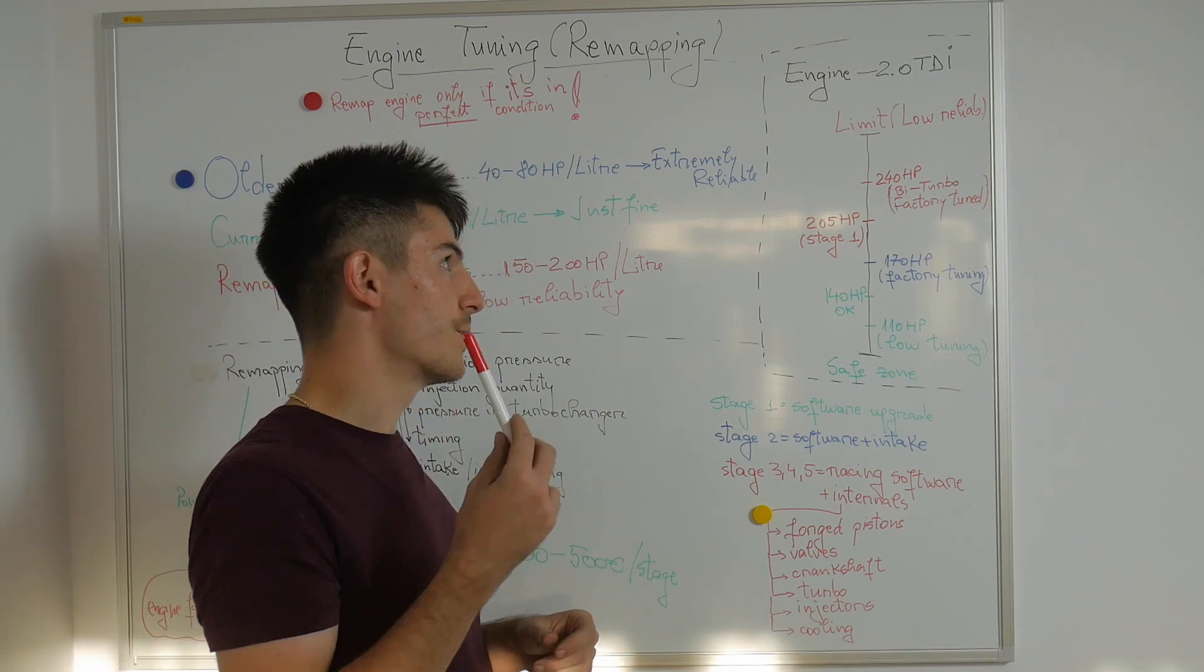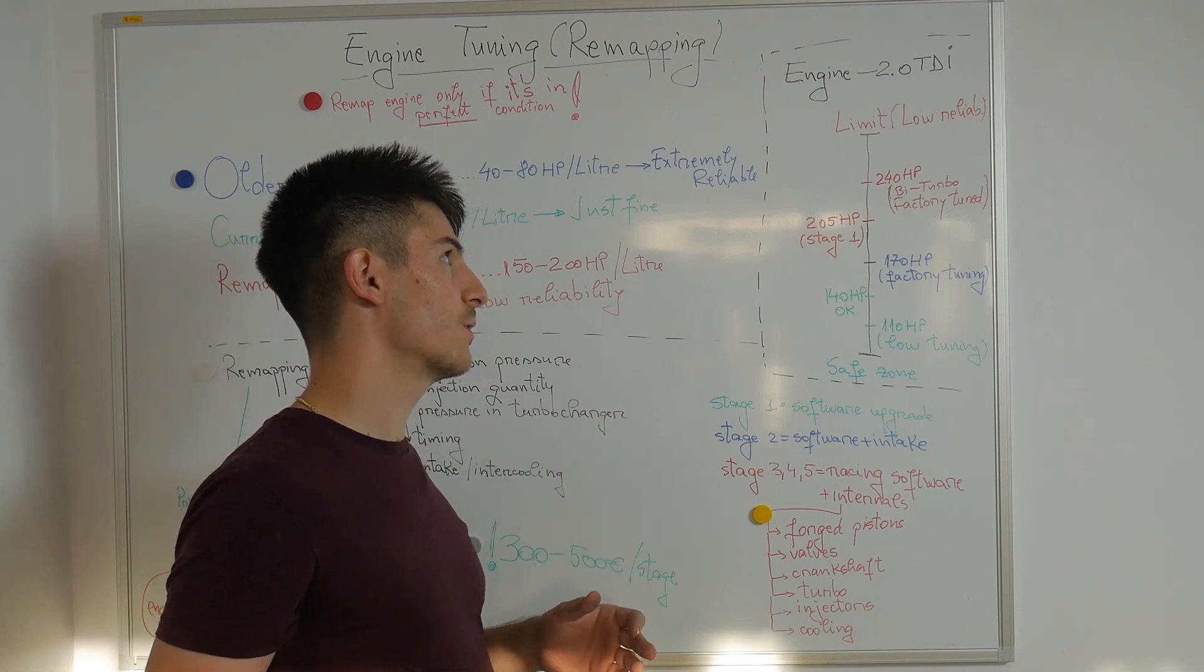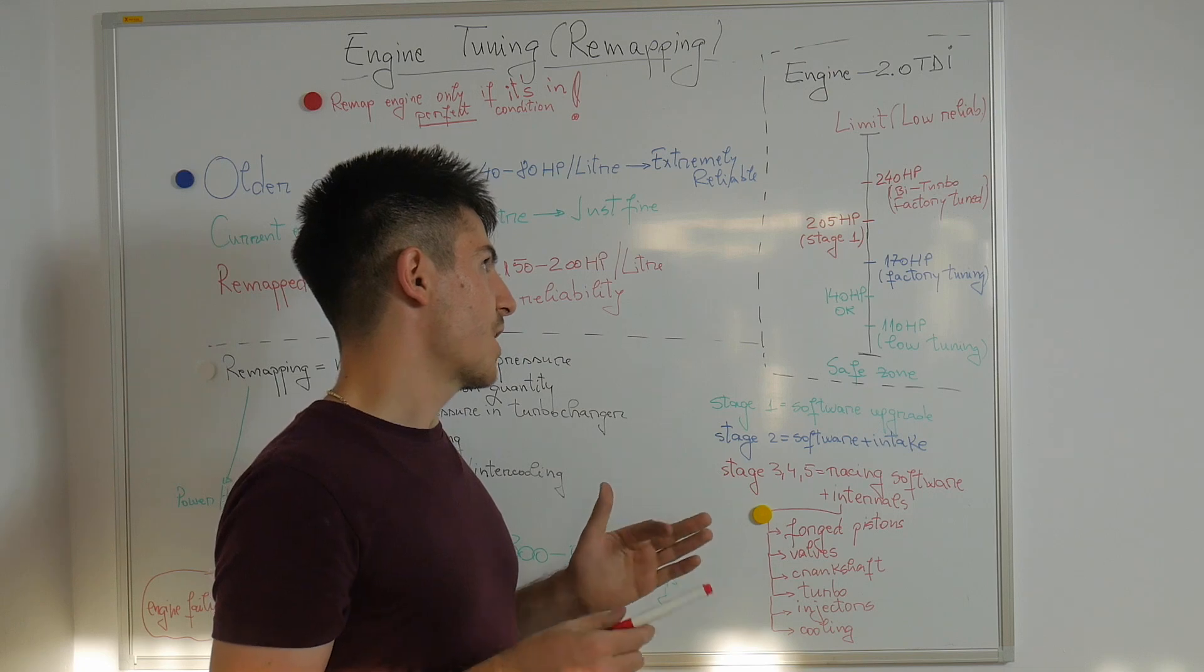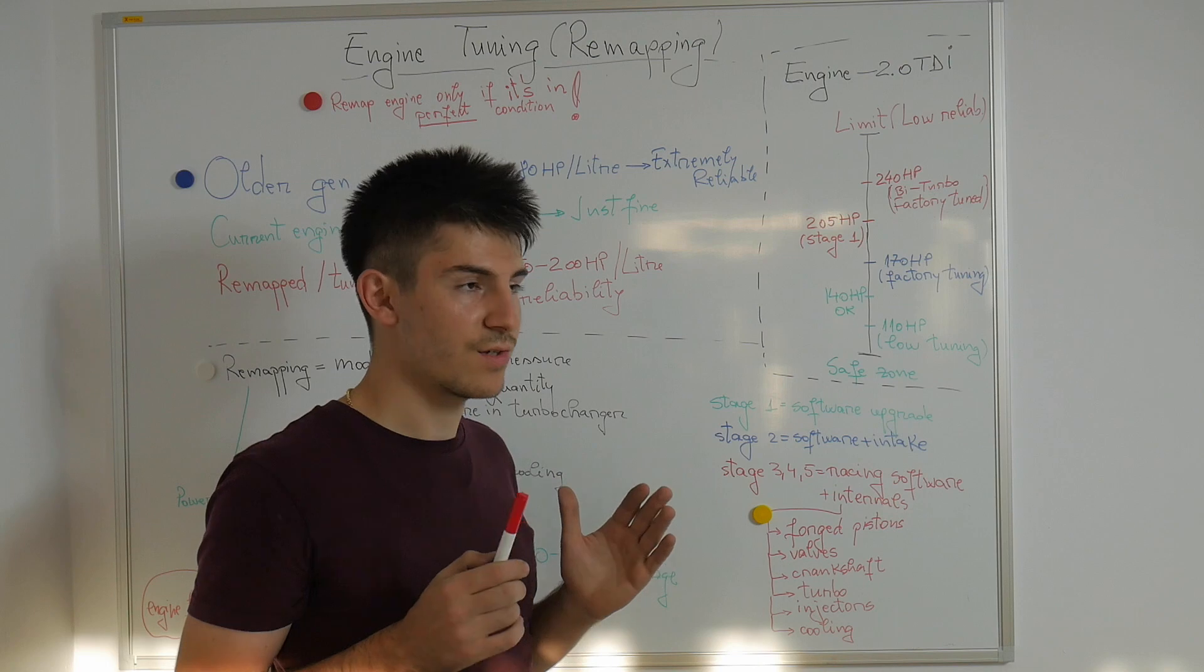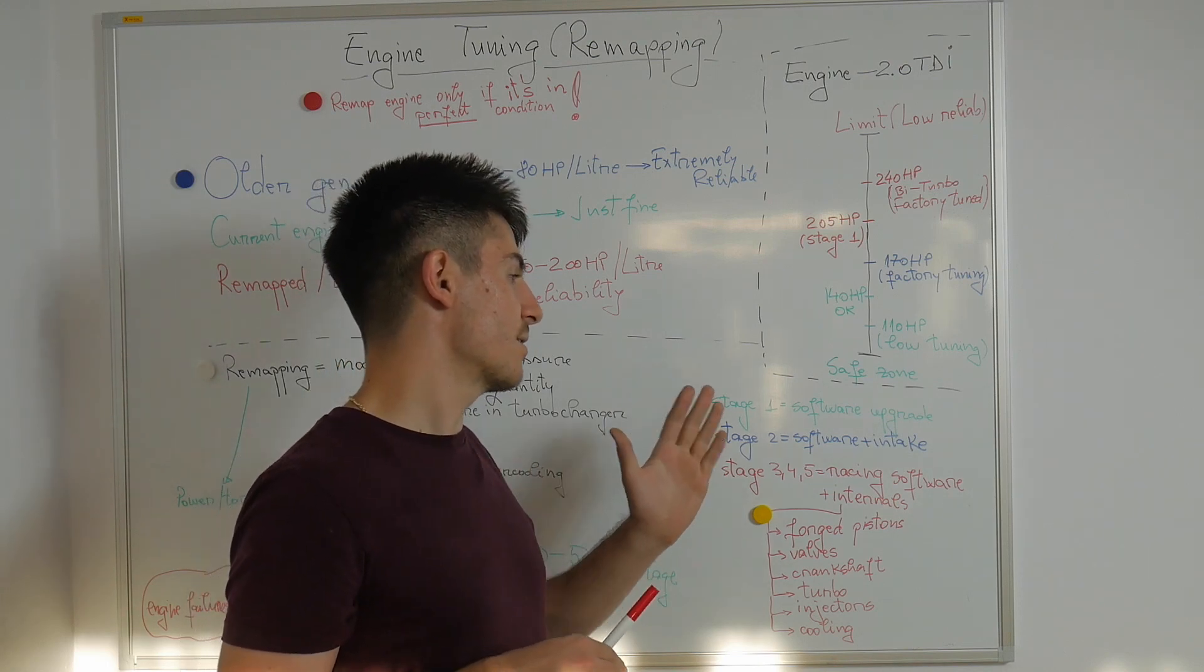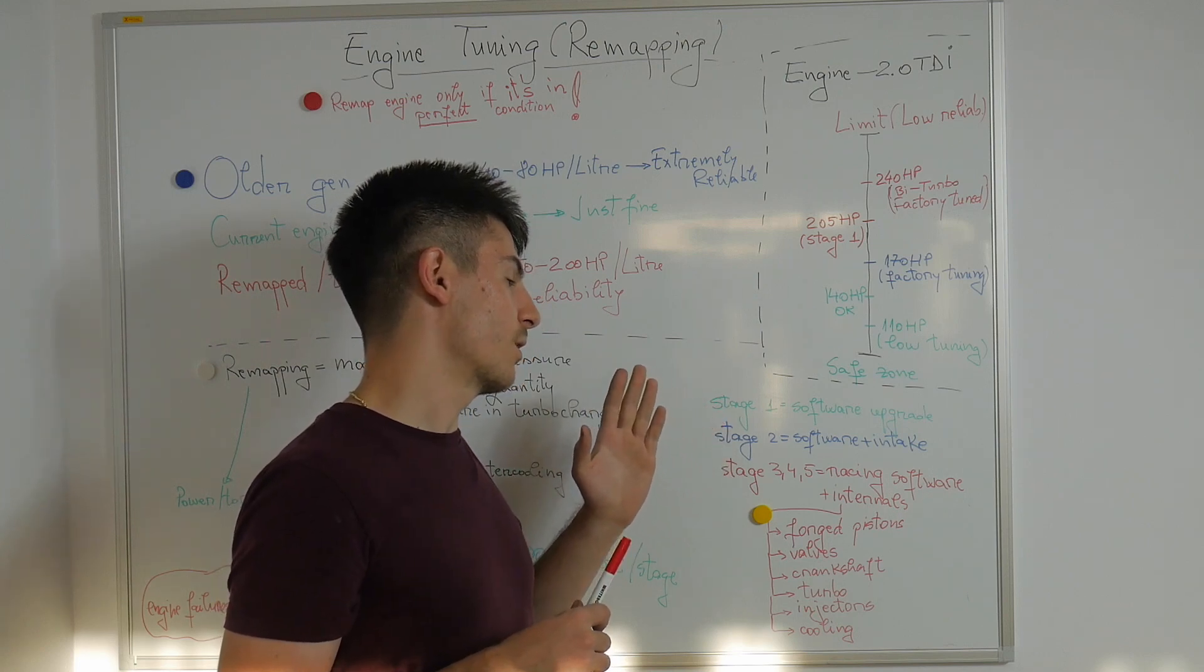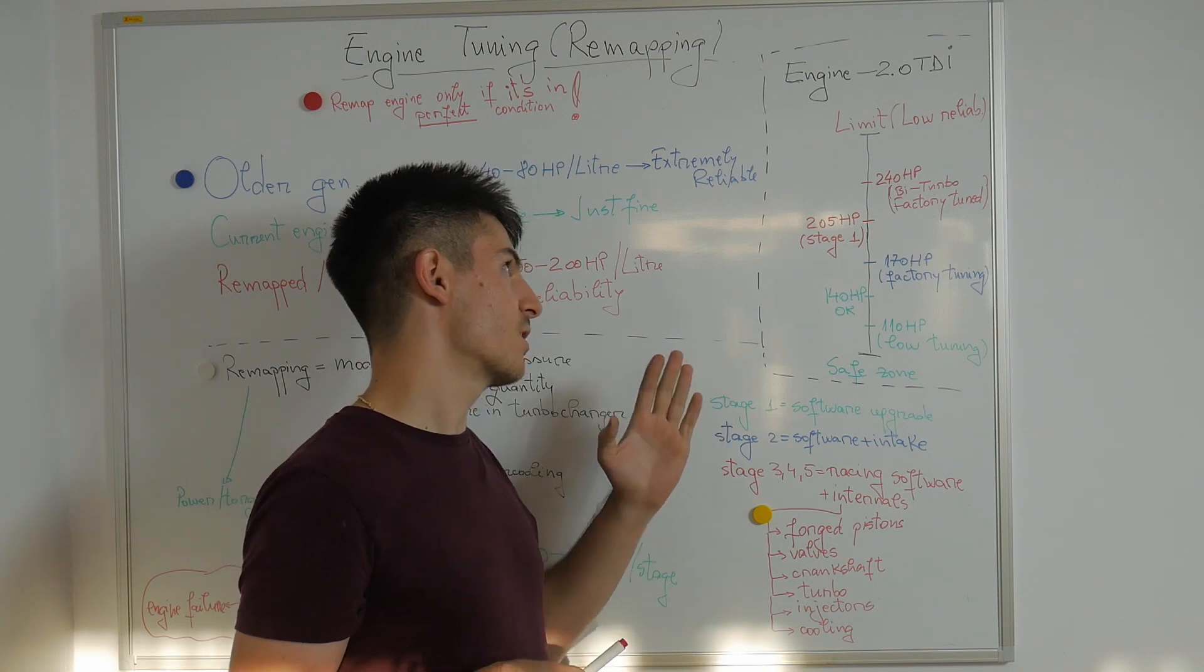Let's take as an example the 2 liter turbocharged diesel engine generally found in Volkswagen group used on the Audi, Skoda, Seat and Volkswagen. Volkswagen has constantly changed and added lots of software versions for this engine. The lowest point for the 2 liter turbocharged engine is 110 horsepower which can be found on the Golf 6. It has low tuning, low fuel consumption and reliability is highly increased. You have the most reliable version of this engine.